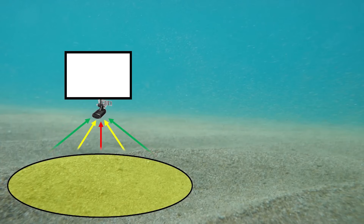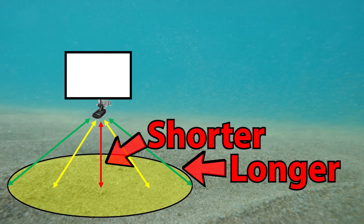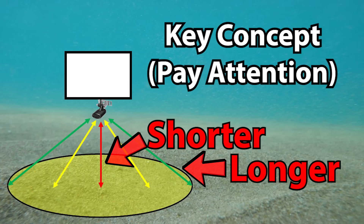Now we're going to look at why fish show up as arches on your fish finder. One important thing that's going to become the basis for this: as our sonar sound wave travels through the water column, the lines at the extremities are longer than those in the center. This illustrates that further out in our sonar cone, not only does it take longer for our sound wave to get to its target, it also takes longer to return back to the transducer from its target.